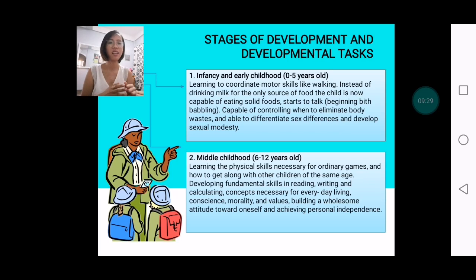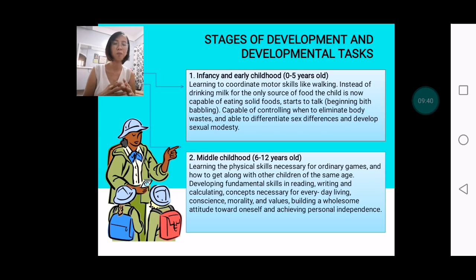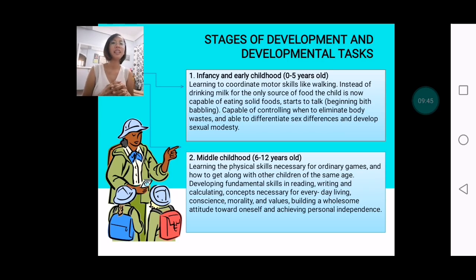Physically, you begin to notice the differences between a boy and a girl, with guidance from parents explaining those differences. Sexual modesty is already being developed at this early point in time, perhaps around four to five years old, because we begin to have that consciousness already.